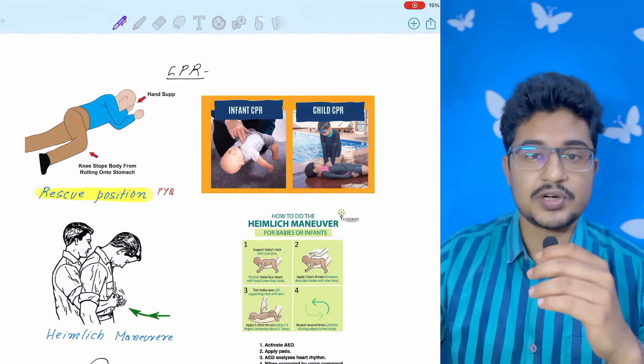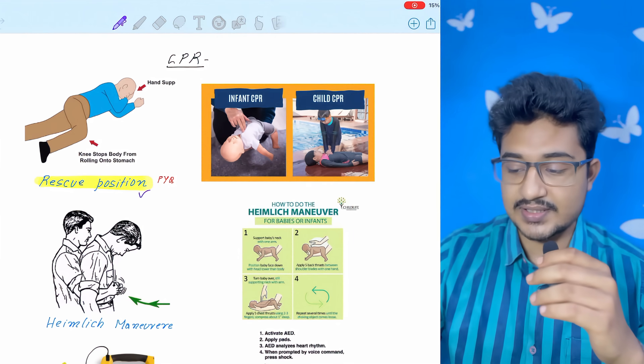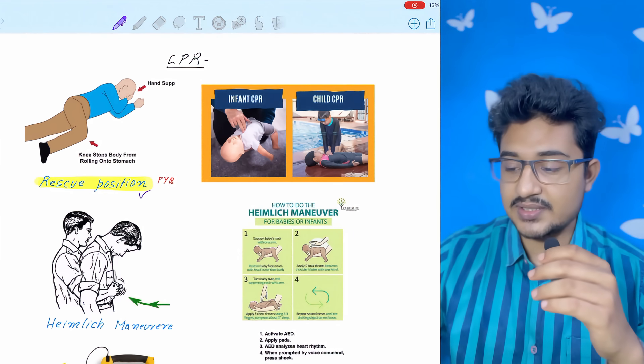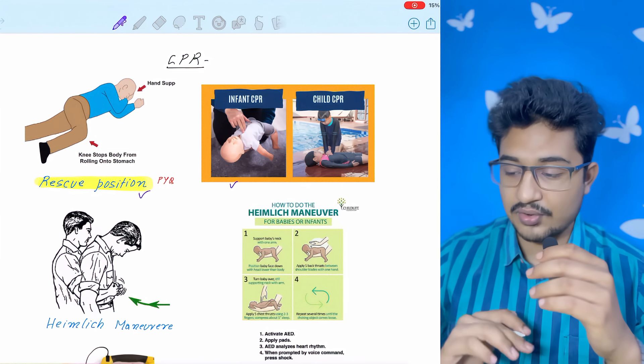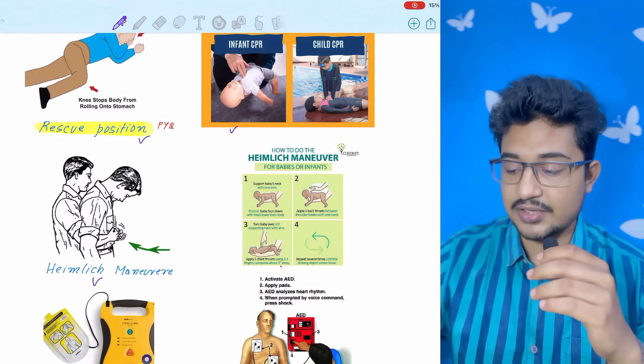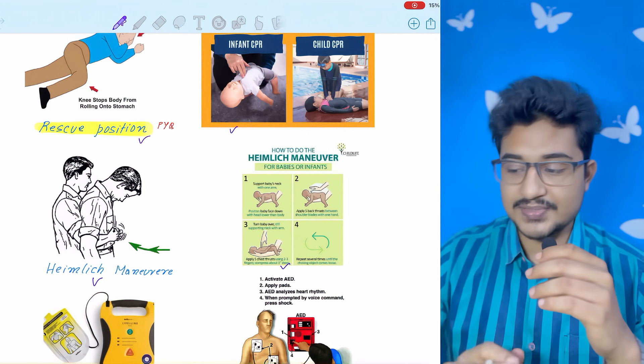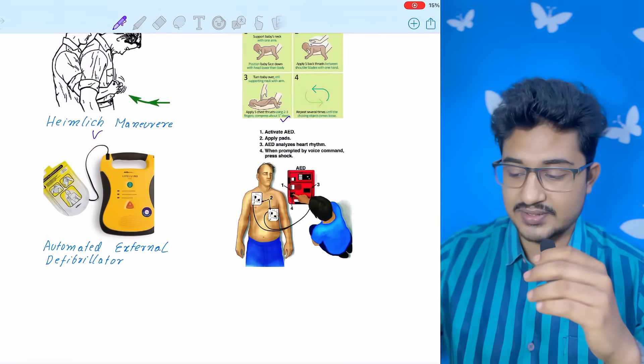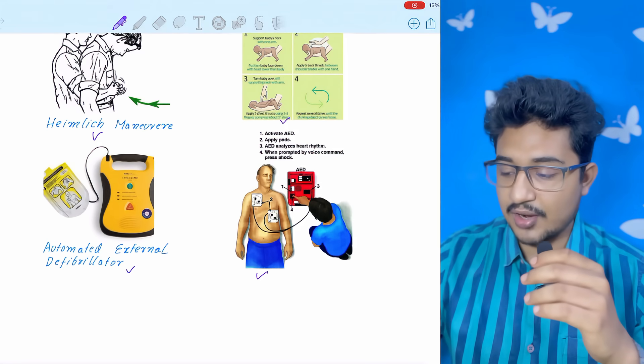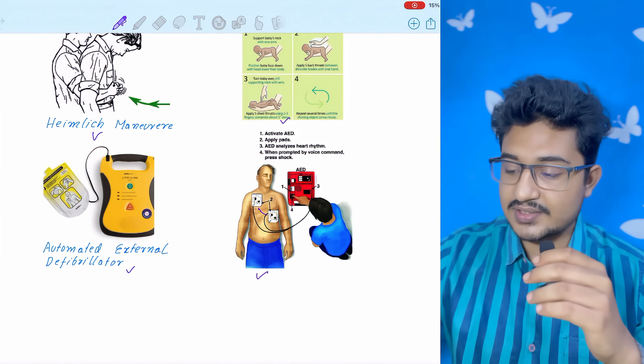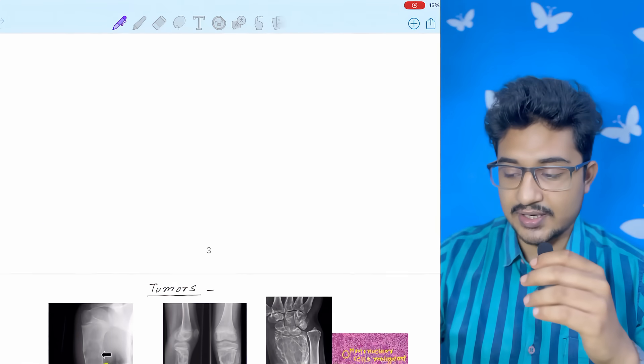In anesthesia, the most important part, and NEET PG is regularly asking about CPR. This is the rescue position, which was asked in NEET PG. In a child, how you should give CPR: one-third should enter, and all the parameters you need to know. This is the Heimlich maneuver. Heimlich maneuver in an infant: what you have to do is five back slaps followed by five chest compressions. This is the automated external defibrillator, and this is how it is positioned. The electric current flows in this direction, in the direction of the heart only.